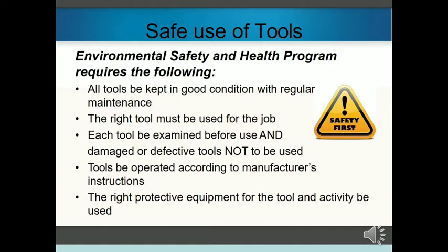Safe use of tools. The environmental safety and health program requires the following: One, all tools be kept in good condition with regular maintenance. Second, the right tool must be used for the job. Third, each tool must be examined before use, and damaged or defective tools not be used. Fourth, tools be operated according to manufacturer's instructions. And fifth, the right protective equipment for the tool and activity be used.